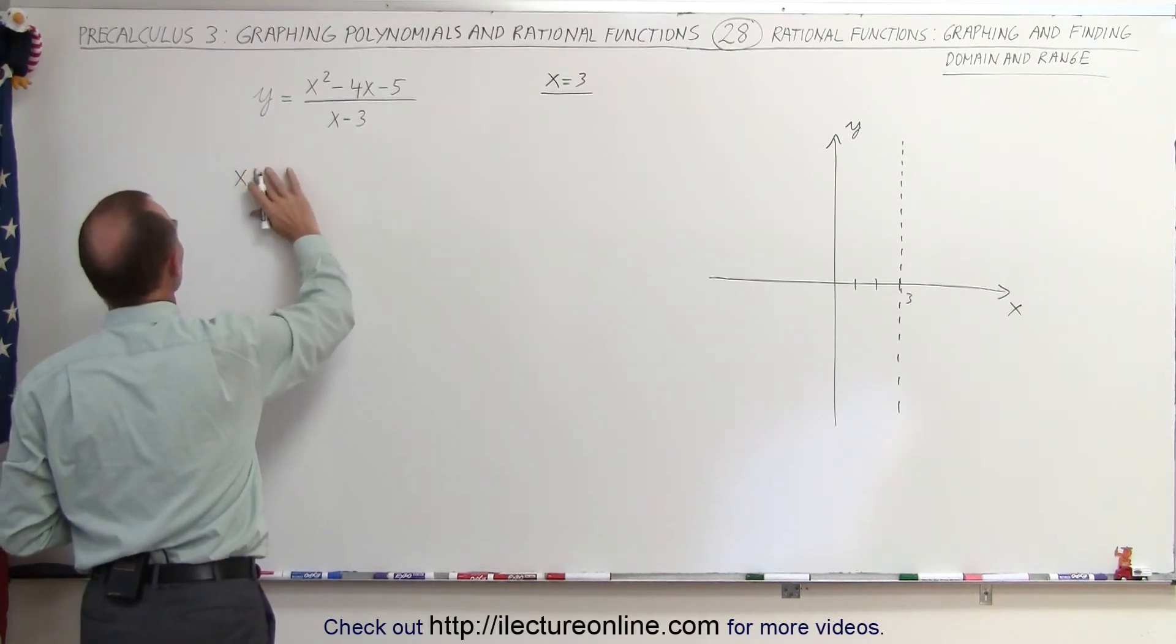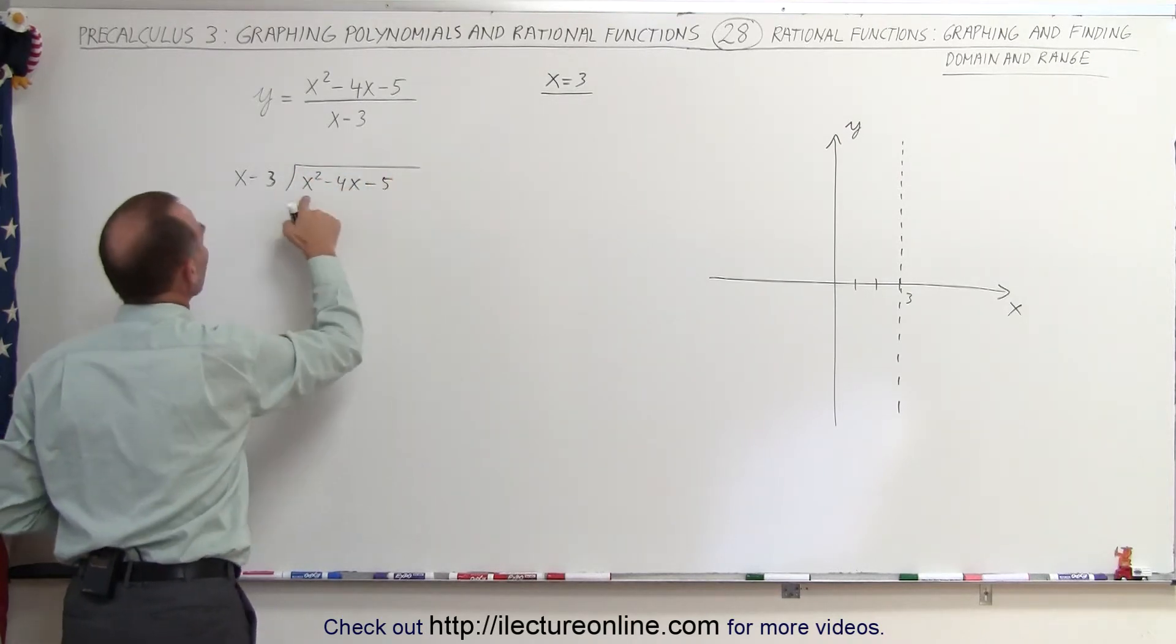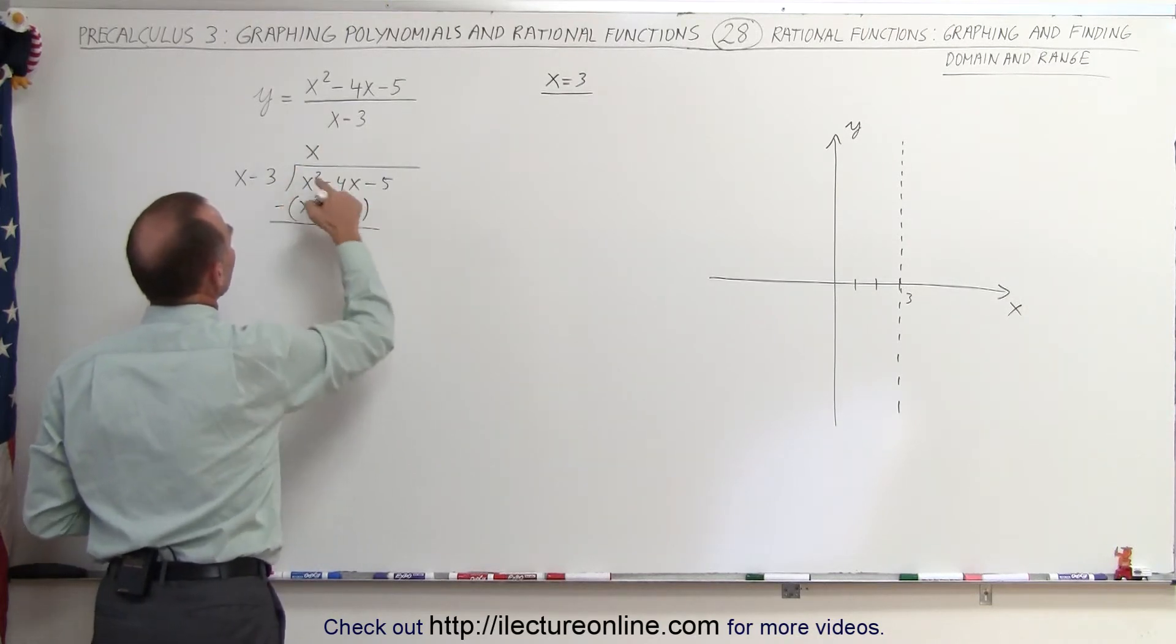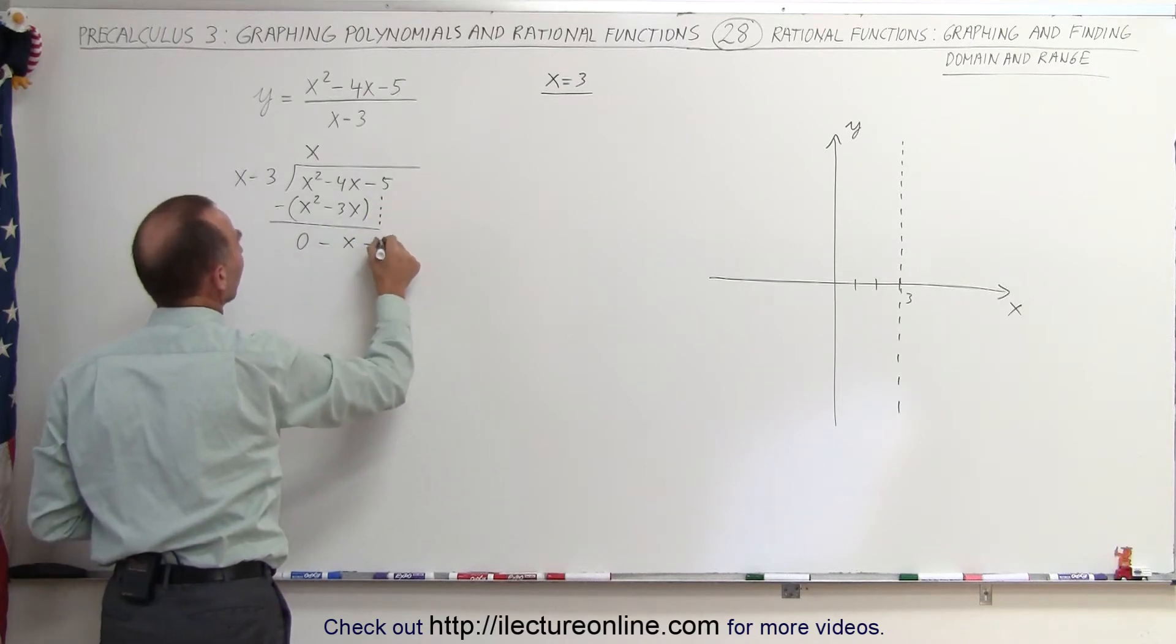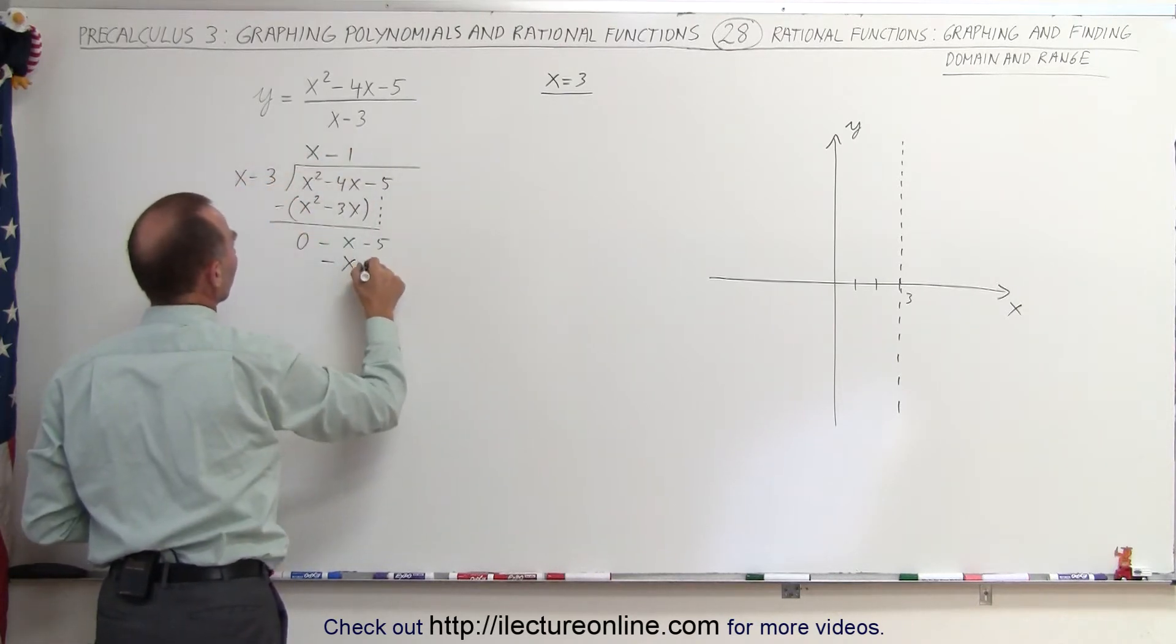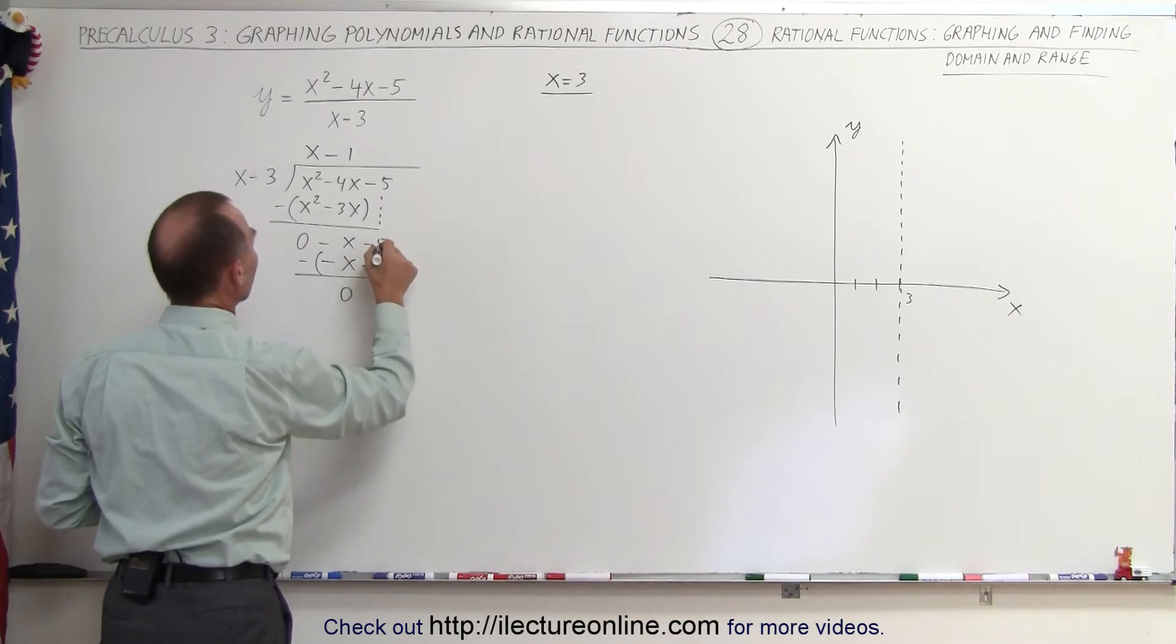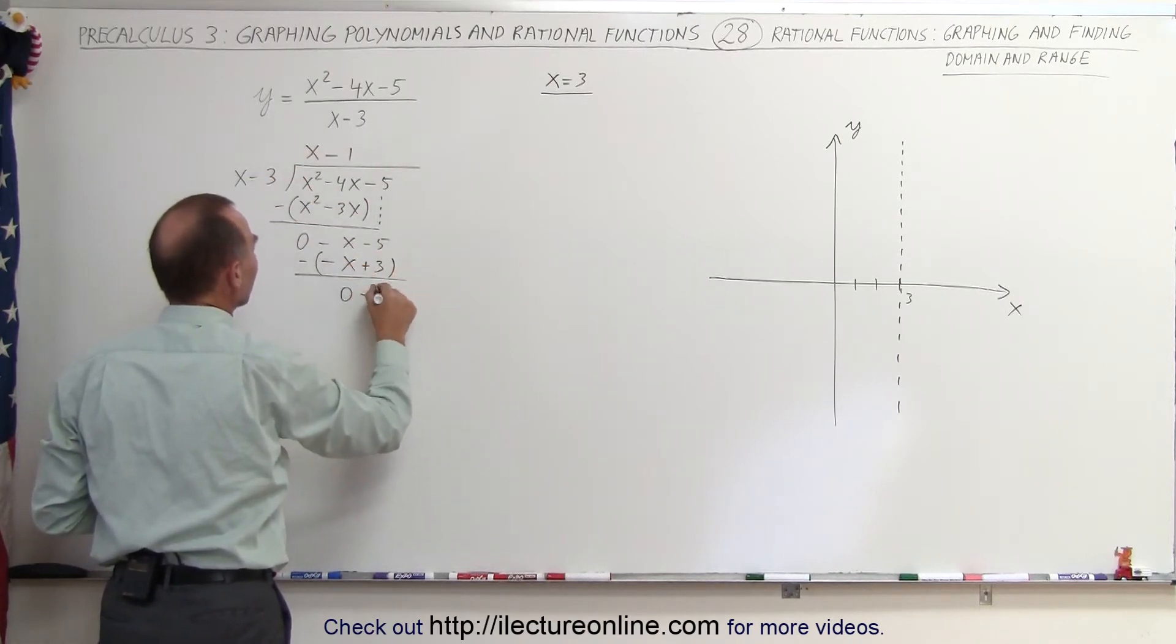We use long division: x minus 3 divided into x squared minus 4x minus 5. So x goes into x squared x times. x times x is x squared, and x times minus 3 is minus 3x. Subtract that from above. This minus that gives me zero, and this minus this becomes minus x. Drop the minus 5. x goes into minus x negative 1 times. Minus 1 times x is minus x, minus 1 times minus 3 is plus 3. When we subtract, that would be zero, and minus 5 minus 3 gives me minus 8.